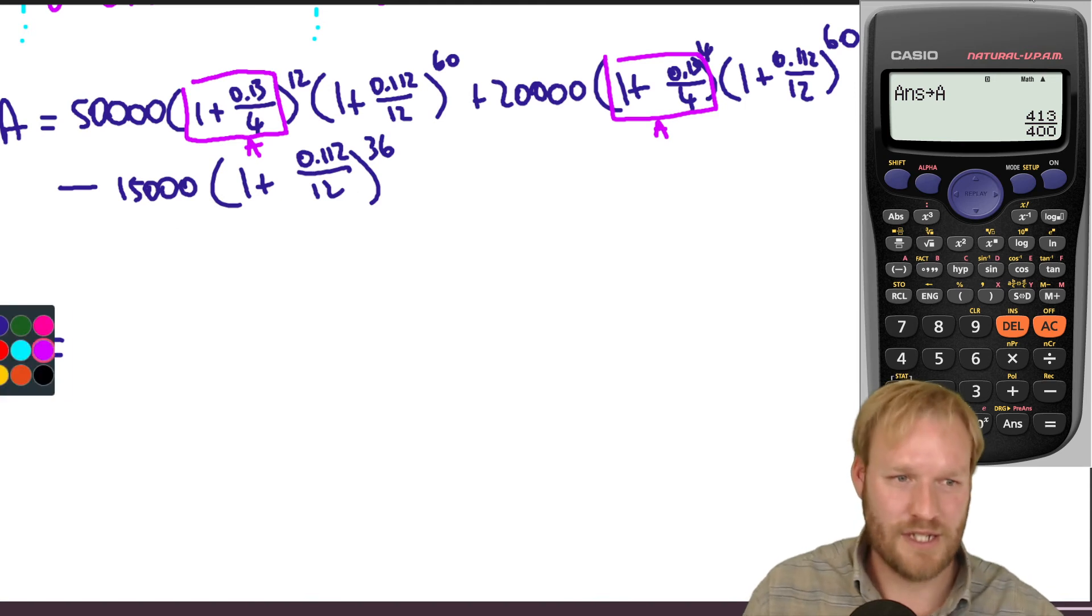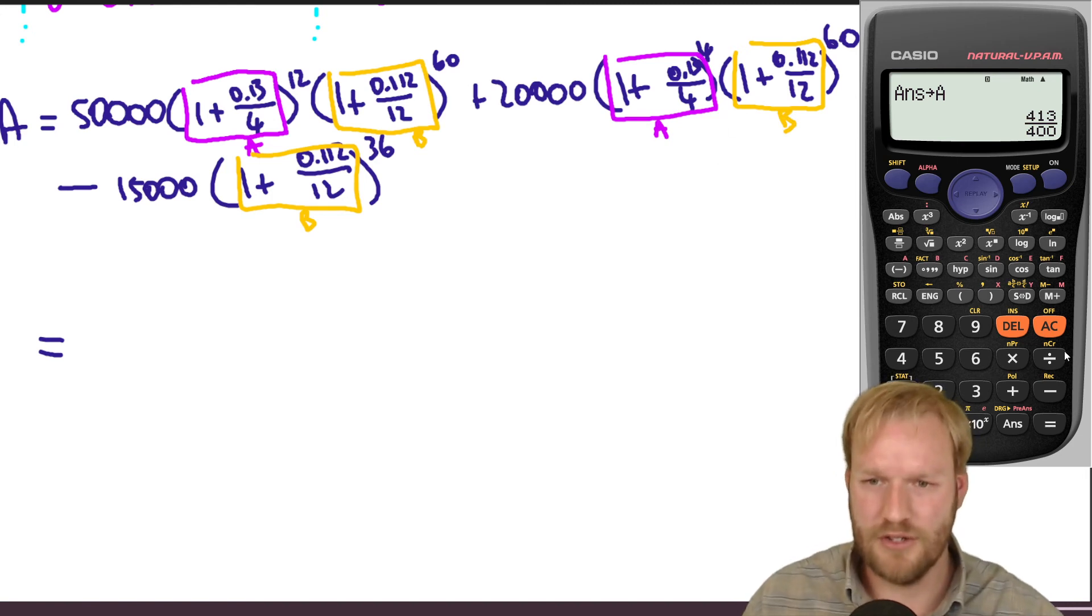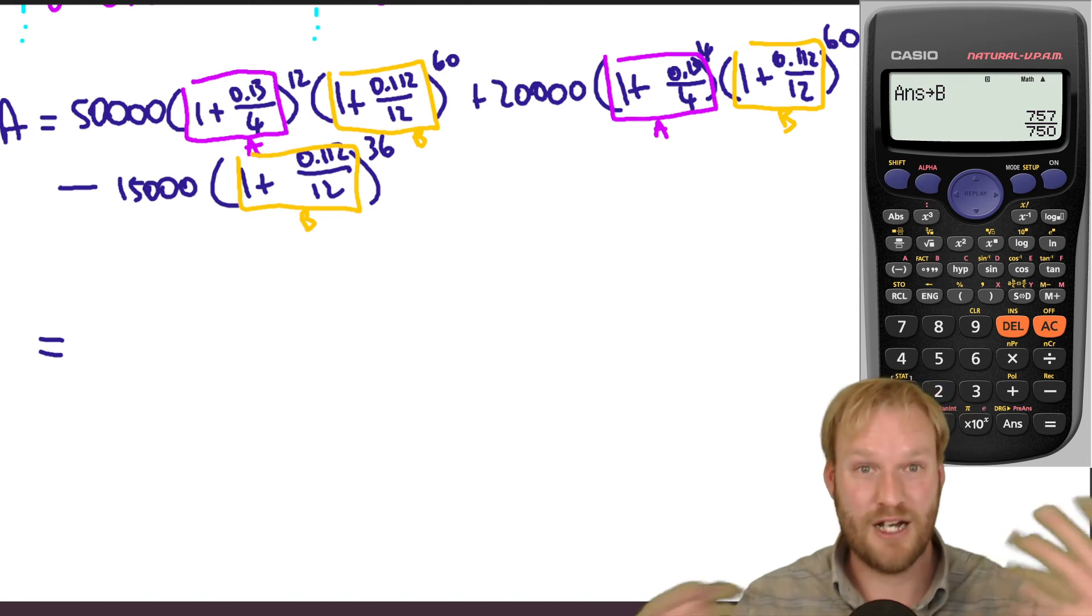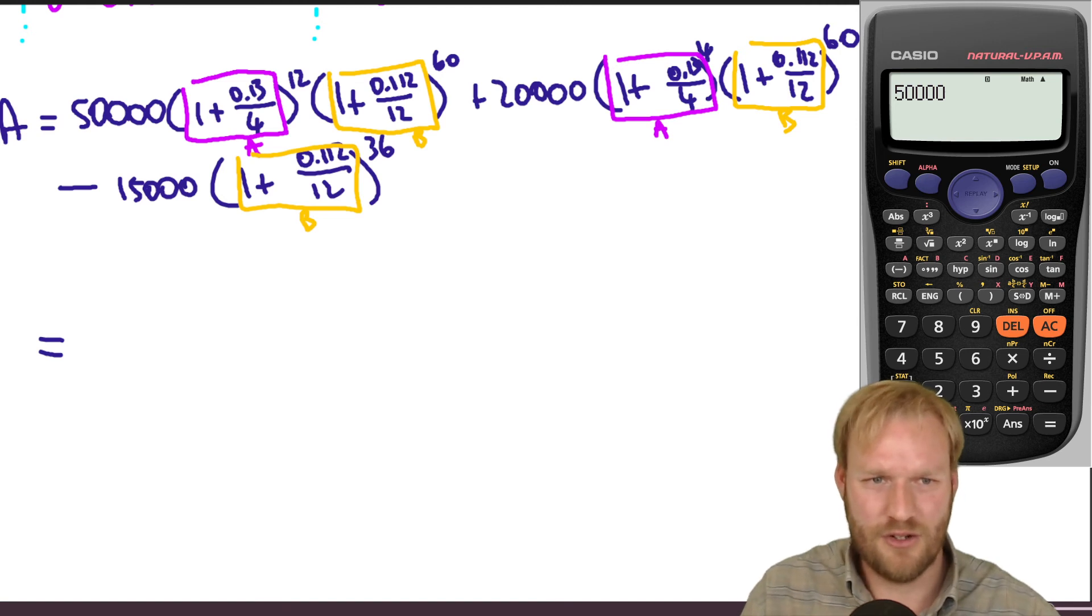And for this other bit, because it comes up a few times, this bit over here seems to come up a few times. I'm going to store that in my calculator in the variable B. So let's do that. One plus in here, 0.112 divided by 12 and shift store B. So now when I put this whole thing into my calculator, it's going to be a whole lot easier because we've got 50,000 into, well, that whole bracket is A. So we can just go A to the power of 12, alpha B to the power of 60. So that already looks easy.